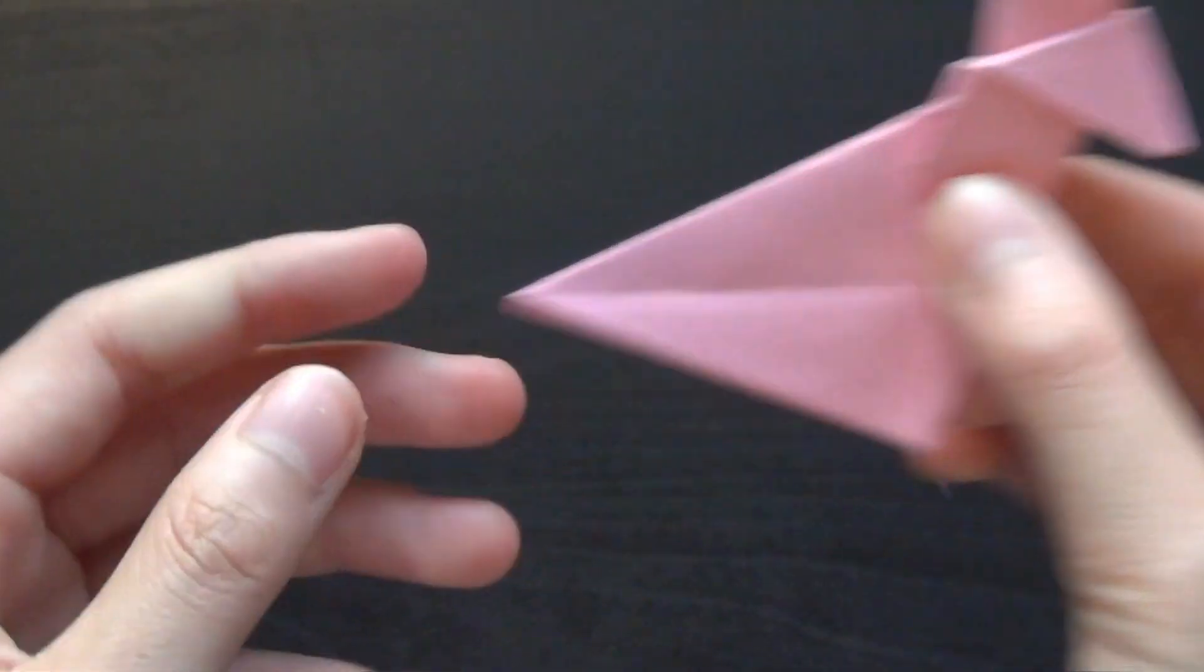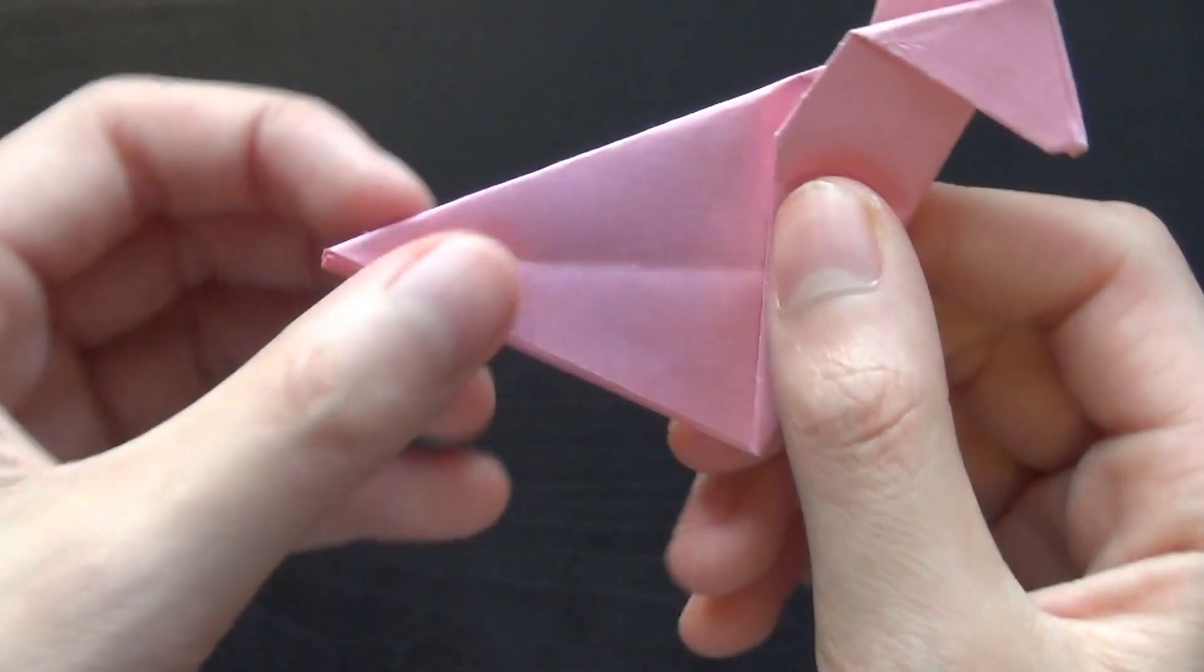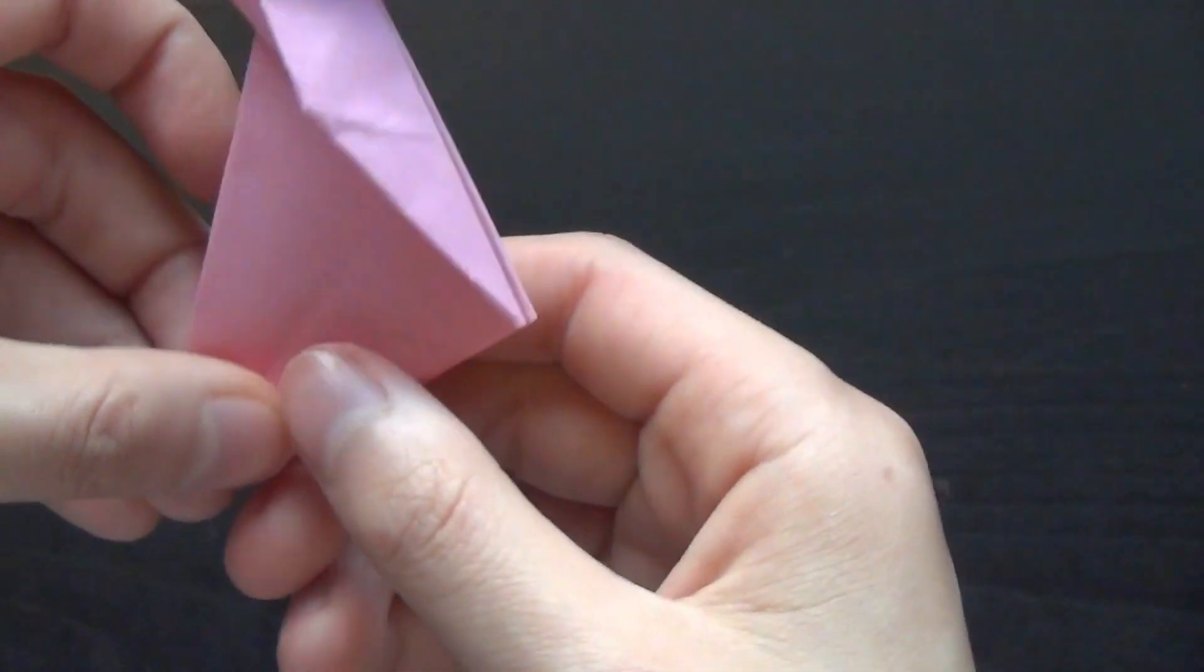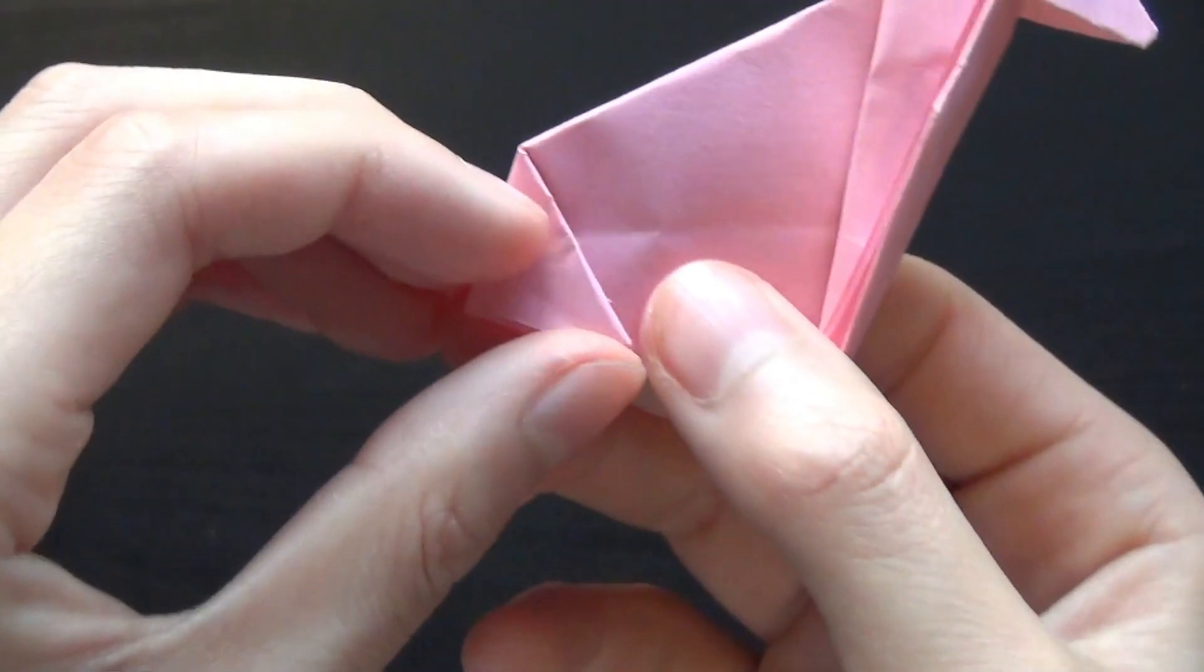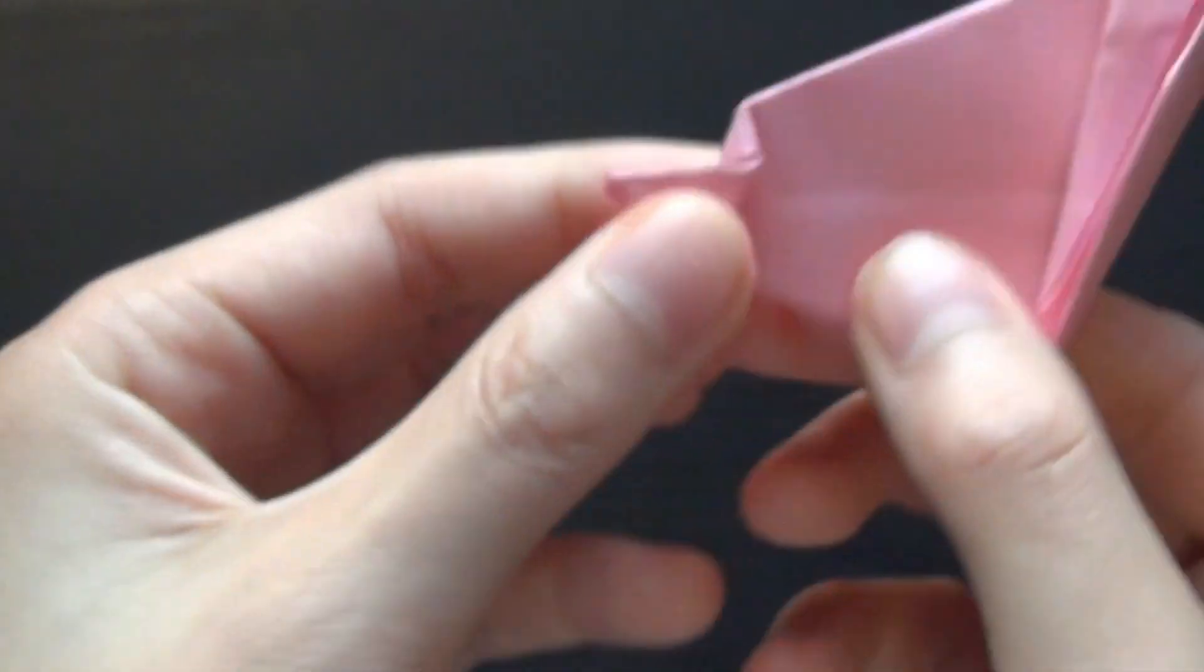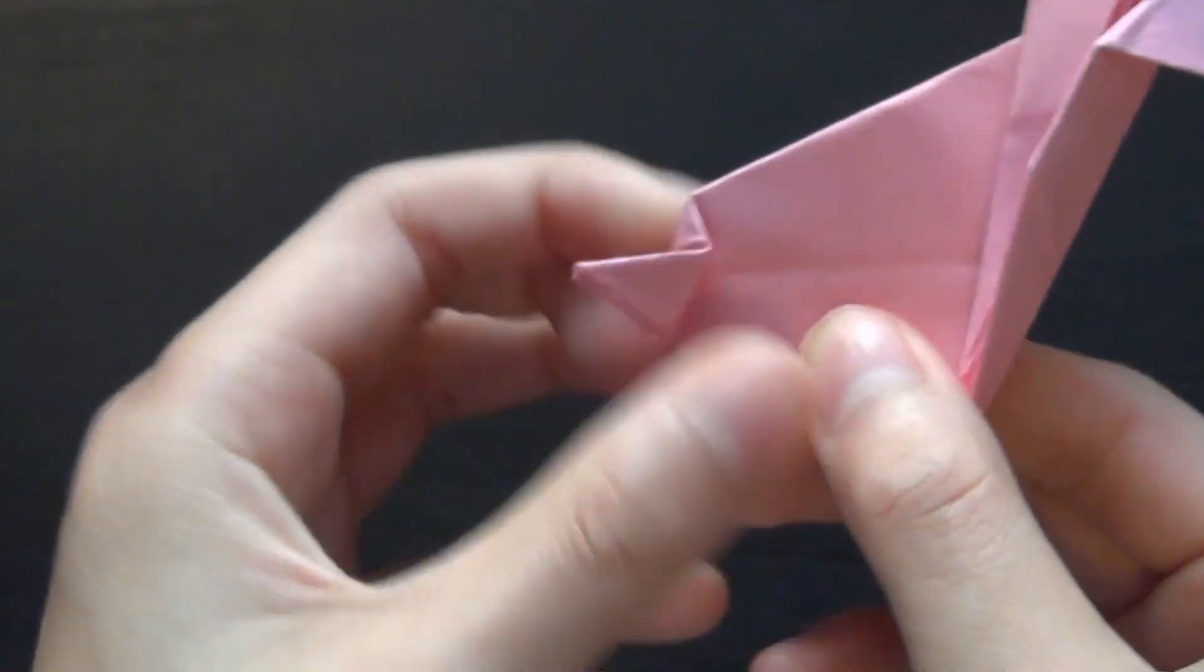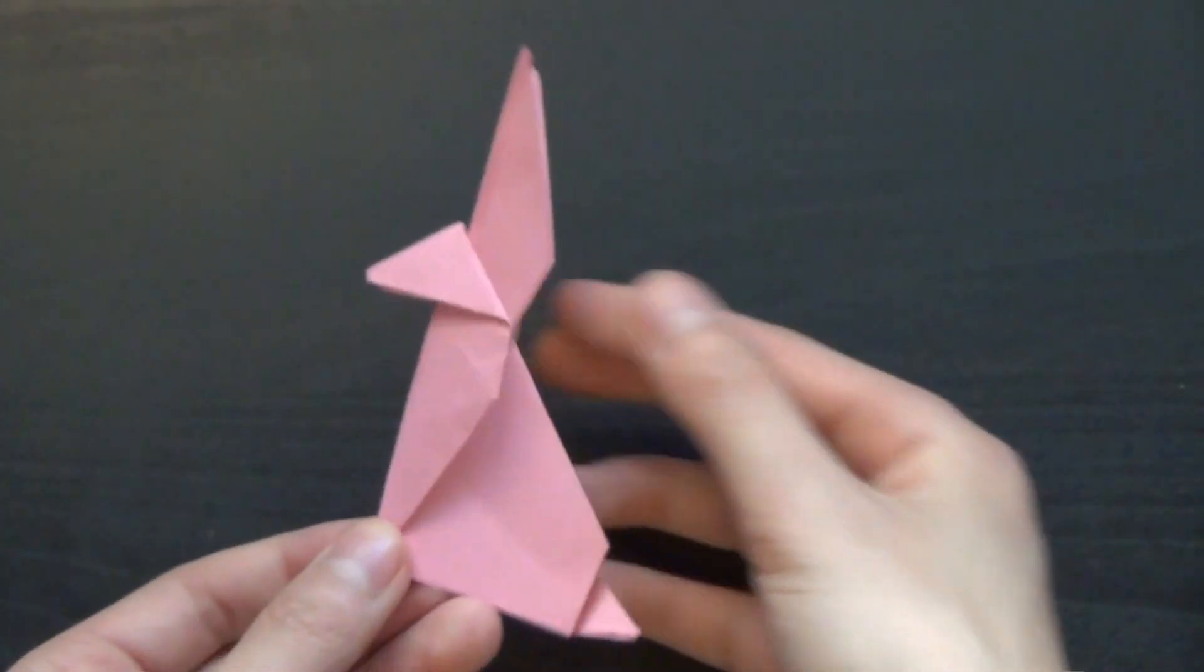Now to make the tail, you want to just pick one side and fold this in, and then fold it on an angle right here. Back out, like that. And this is your finished Easter Bunny.